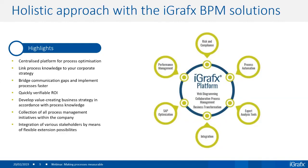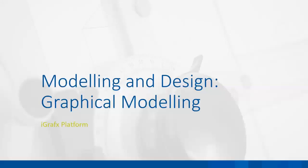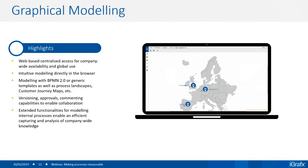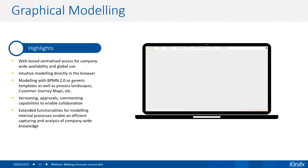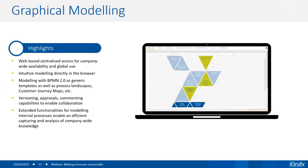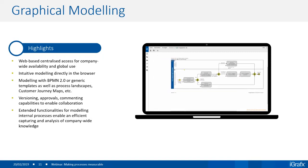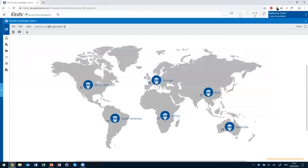Before I can show you how to create a KPI, we need to take a few steps back and give a quick introduction to the modeling and design phase, because we can only measure a process if we already have one. The graphical modeling highlights include web-based centralized access, intuitive modeling directly in the browser, BPMN 2.0, generic templates, and even customer journey maps. I'll switch live to the tool — you can see at the top I'm logged in via the web browser, and I can start navigating through my process landscape.